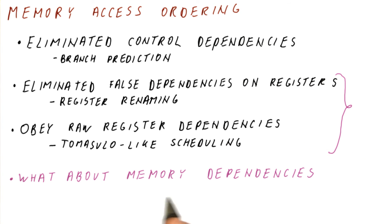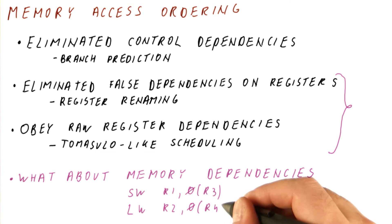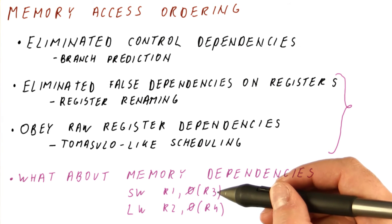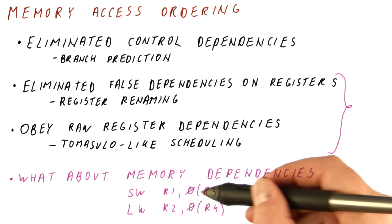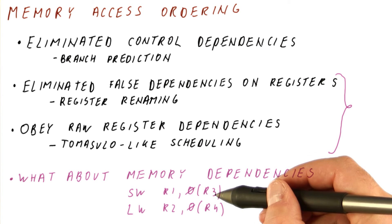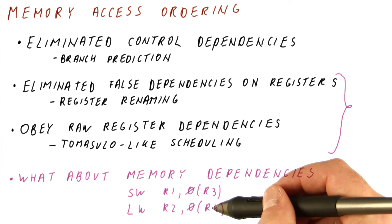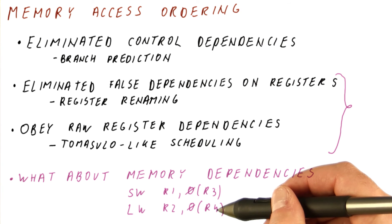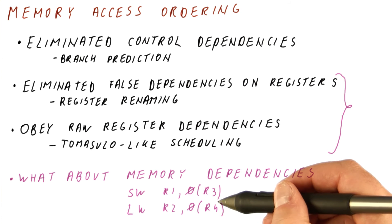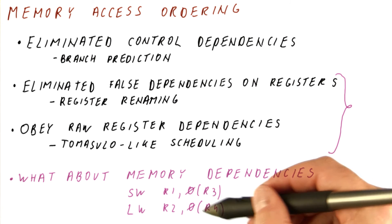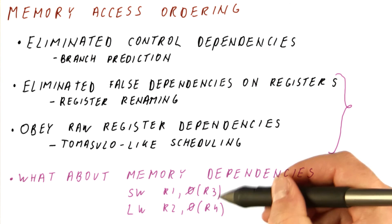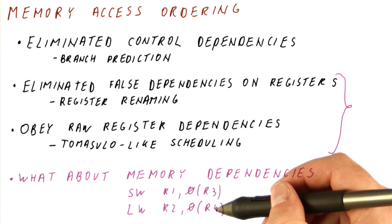But what about memory dependencies? If we have a store and then a load, there could also be a dependence between the memory value written by the store and the value read by the load. If these two addresses are the same, then the load needs to get the value from the store, and in that case we should be doing them in order. However, if the two addresses are not the same, just like with registers, we actually don't need to maintain program order between these accesses.